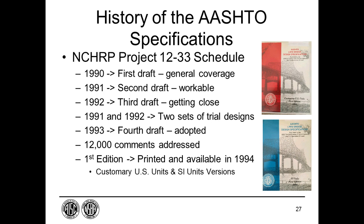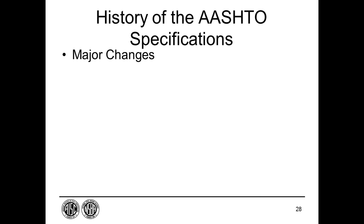The first edition AASHTO LRFD specification was printed and made available in 1994, in both customary US units and SI units versions — the red cover was the US units version and the blue was the SI units version. The LRFD specification was initially adopted as a co-equal alternative to the AASHTO standard specifications, leaving it up to individual states to decide which specification to use on a particular project. The first major bridge designed using the new LRFD specification, the Blue Water Bridge between the US and Canada, was opened to traffic in 1997.